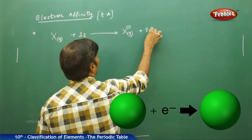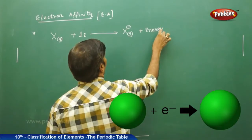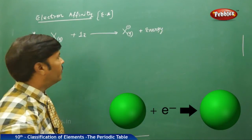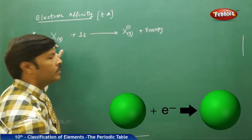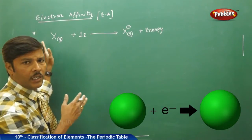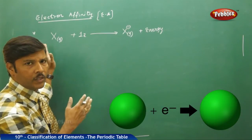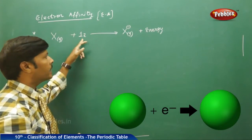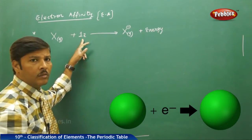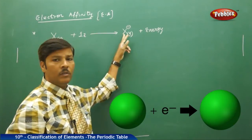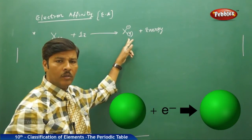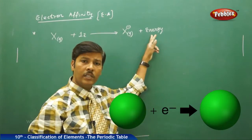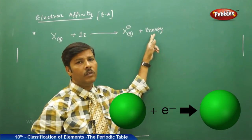The release of energy is simply called electron affinity. The definition is there in the equation itself: when a neutral isolated gaseous atom accepts an electron, it forms a uninegative gaseous ion and it releases energy — that is simply called electron affinity.